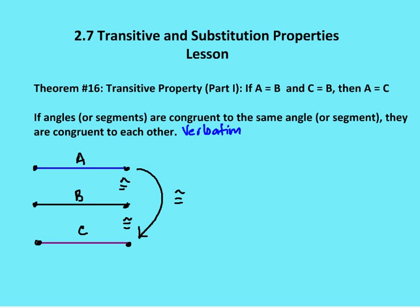So I can say if A is congruent to B — in this case, line segment A is congruent to B, and line segment B is congruent to C — then I can draw the conclusion that A is congruent to C. For two-column proofs, write the entire reason out: if angles or segments are congruent to the same angle or segment, then they are congruent to each other.